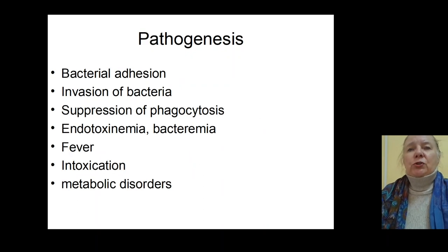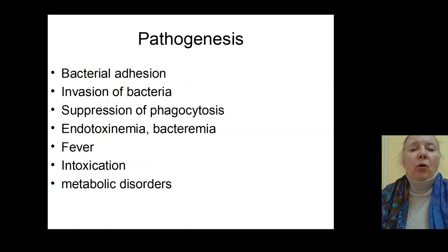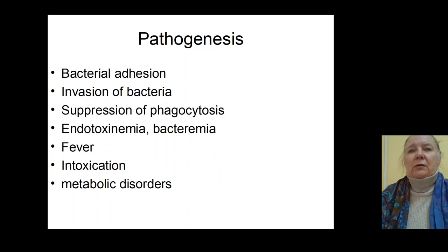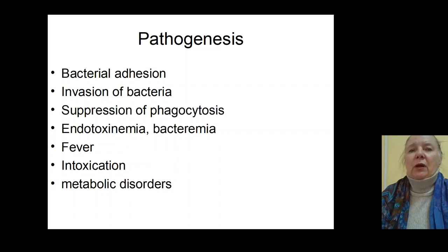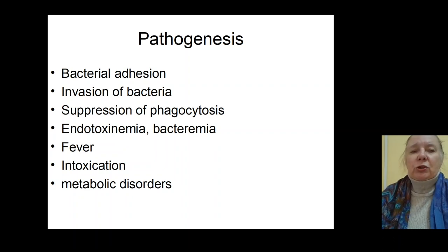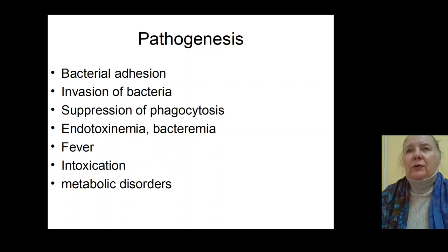Let's speak about the pathogenesis of Salmonellosis. We spoke about the oral mechanism of transmission. Bacteria penetrate to the intestinal system and are destroyed by gastric juice and antibodies, specifically secretory immunoglobulins in gastric juice, causing destruction of Salmonella and formation of endotoxins in the stomach. Endotoxins then penetrate to the blood, causing increasing temperature, intoxication, and formation of bacteremia and endotoxinemia.